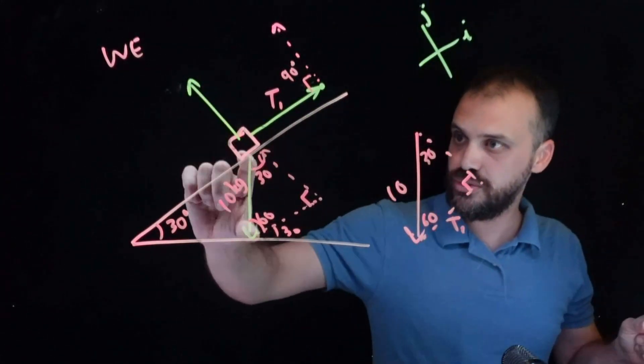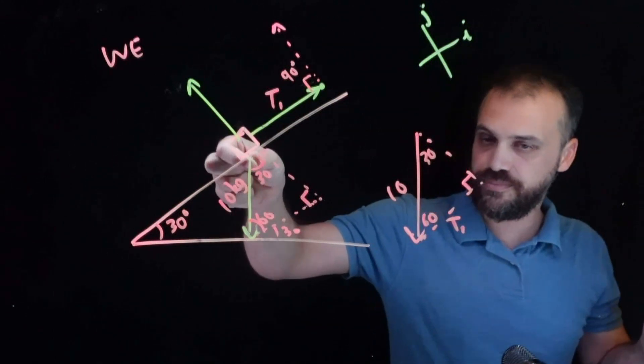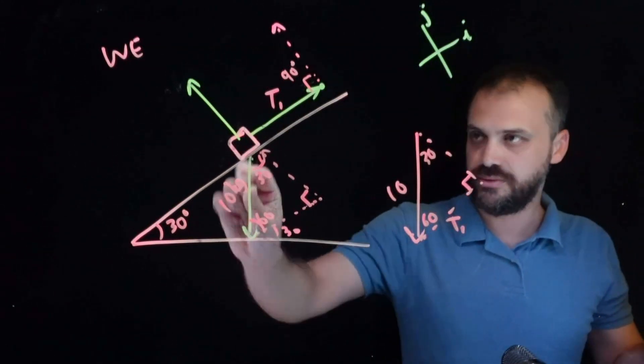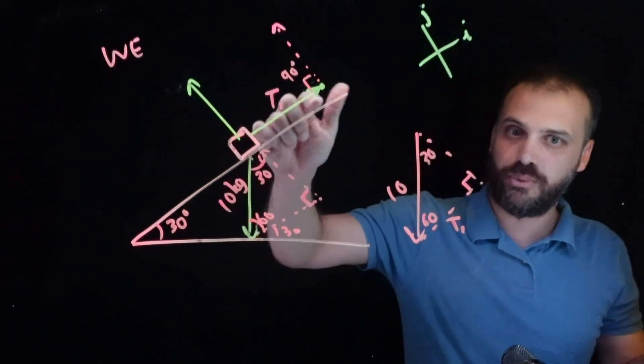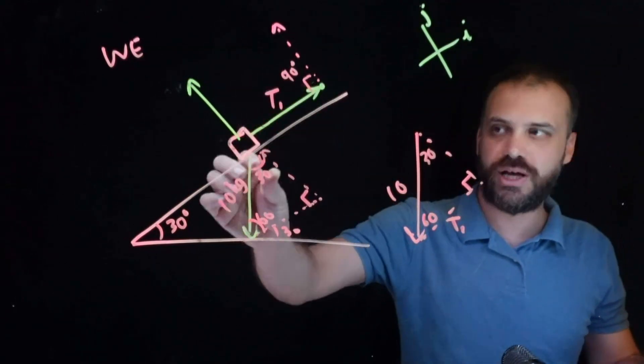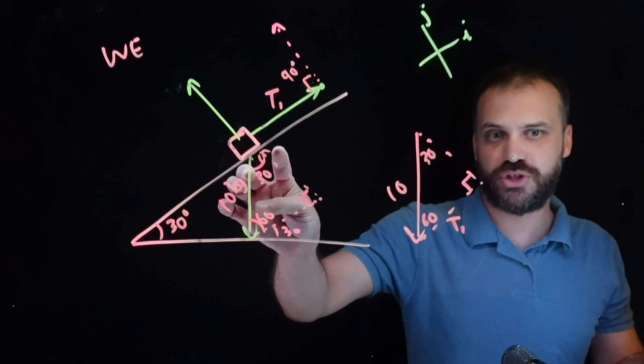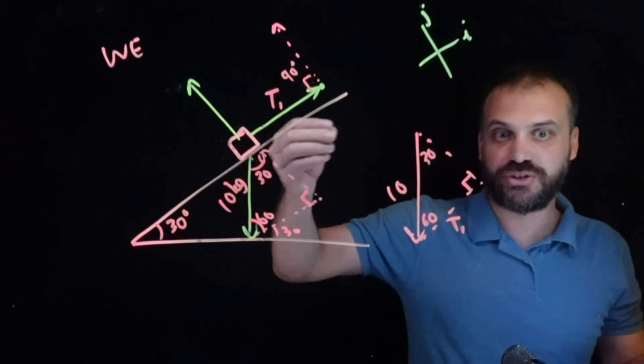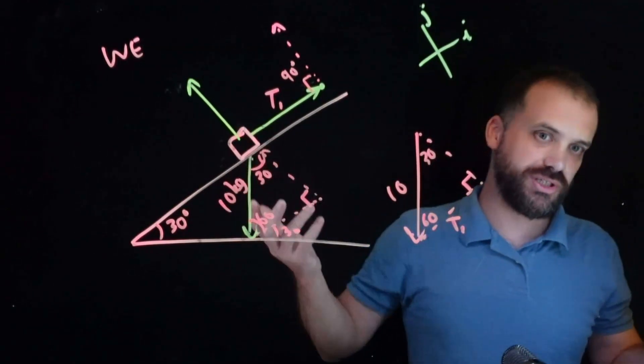What's important is understanding that when you've got an inclined plane like this, you can use the weight here, you can use the normal contact force, and whatever tension happens to be holding it up. Could be a string holding it up, it could actually just be friction. This could be a rough surface, and you're finding out how much friction is being applied to this object to keep it steady.